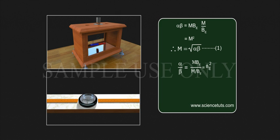And alpha by beta is equal to MBE by M by BE, which is equal to BE square. BE square is equal to alpha by beta. Therefore, BE is equal to square root of alpha by beta, Equation 2.